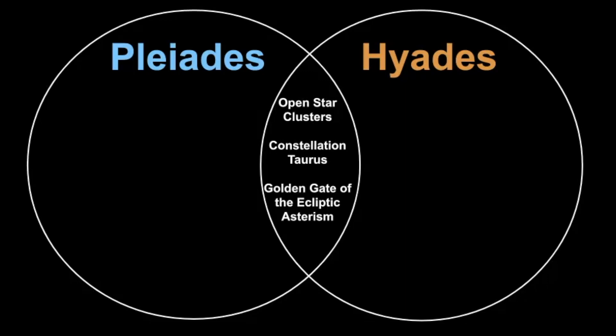So the things that are similar, they're both open star clusters and they're both in the constellation Taurus. You can see them together in the sky. If you can find one you should definitely be able to find the other.